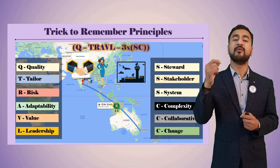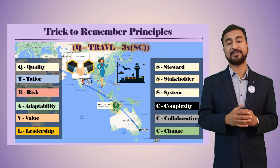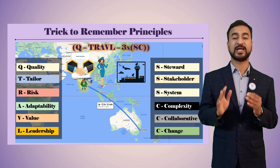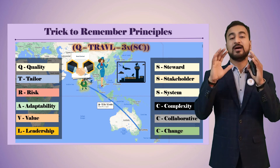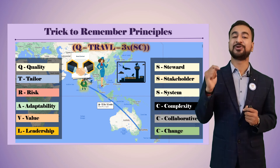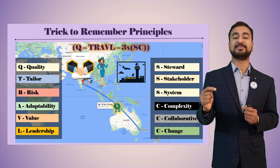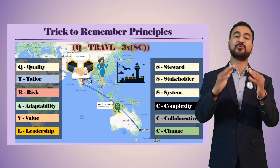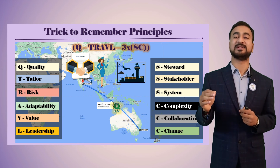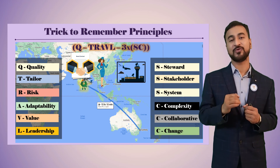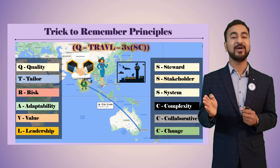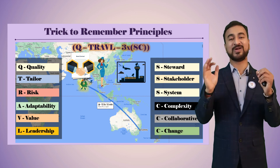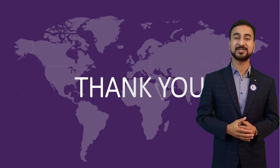To recap — try to remember this one sentence: 'Mr. Q traveled three times from Sydney to Chennai.' That one sentence helps you remember all 12 principles. I repeat: Mr. Q traveled three times from Sydney to Chennai — and you can remember all 12 principles.